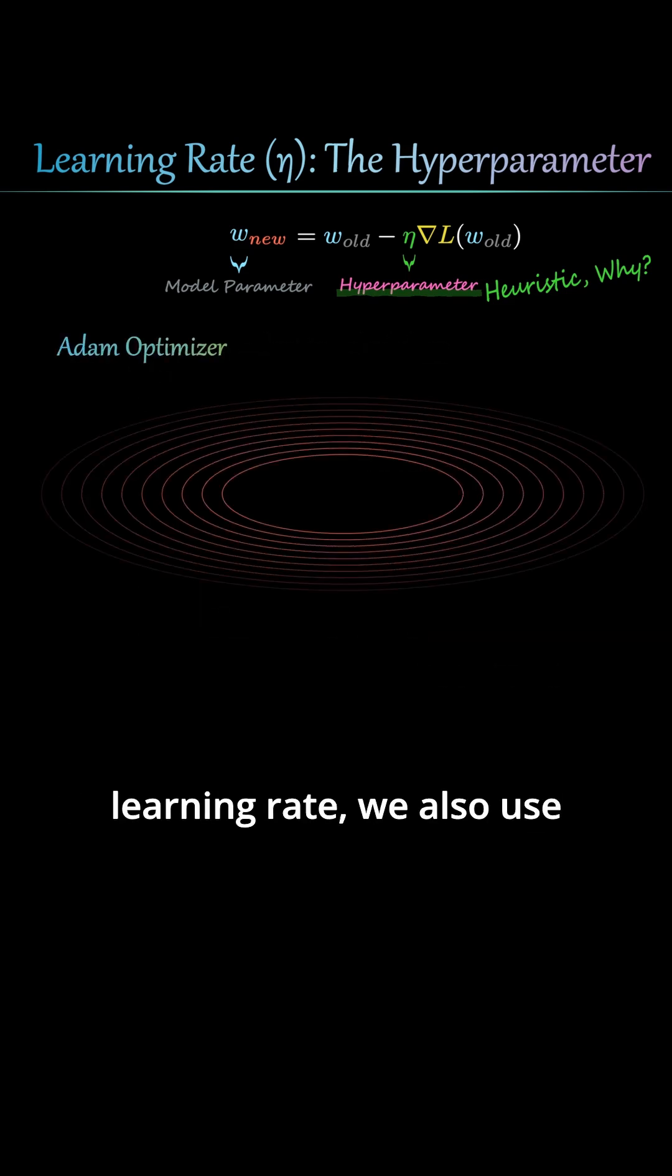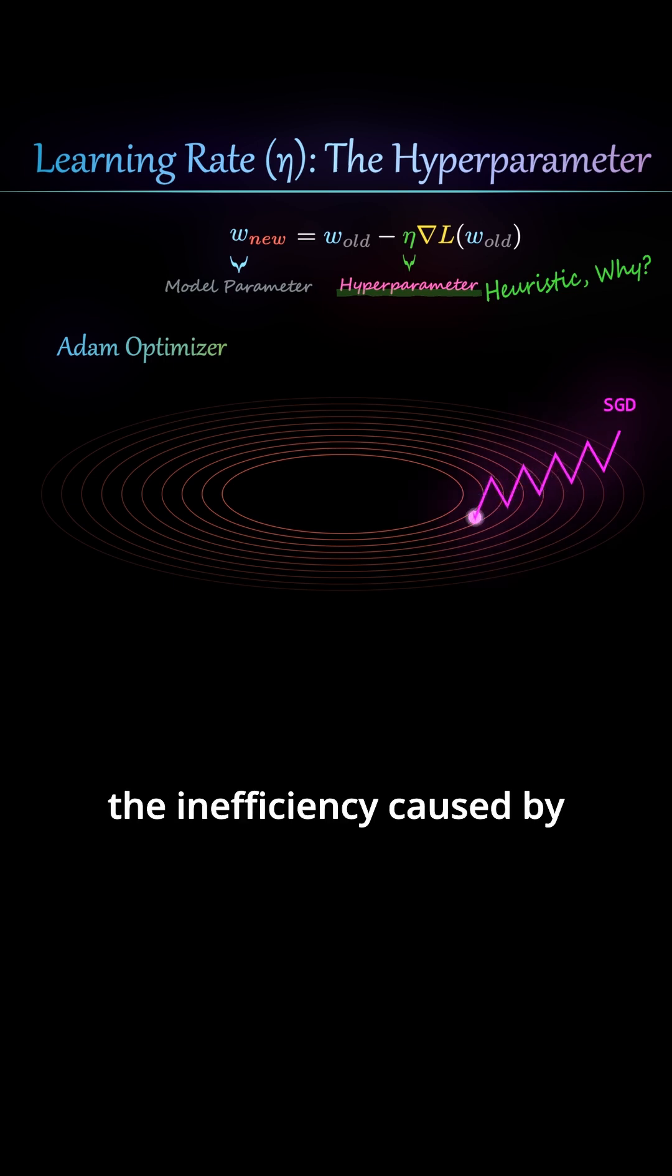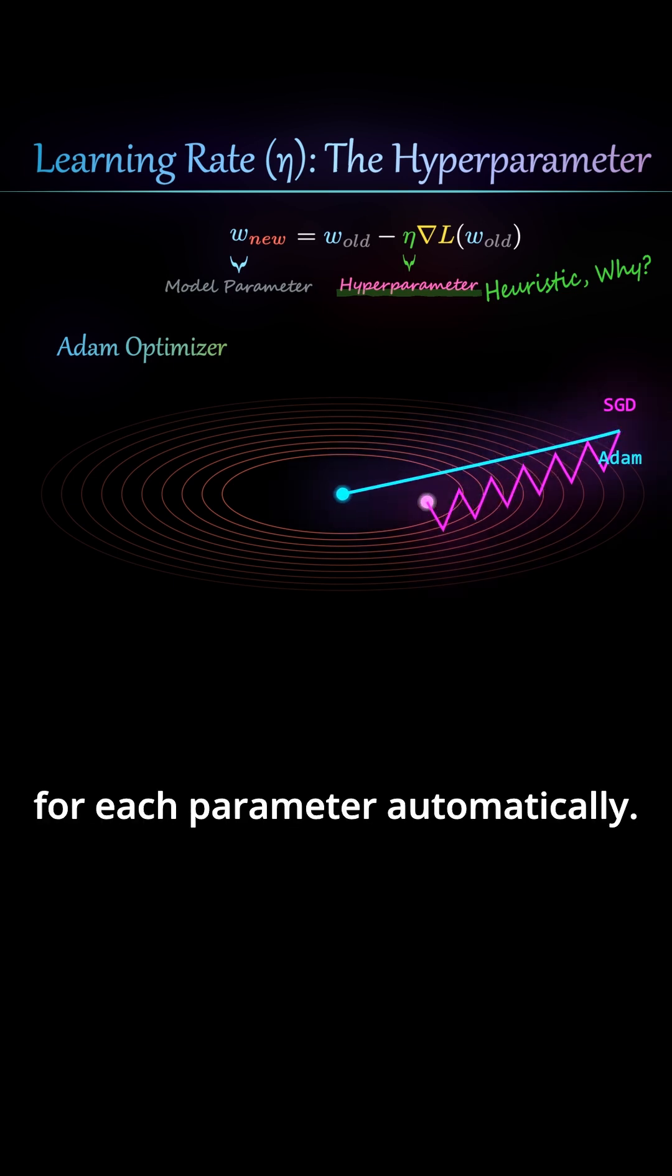Separately from scheduling the learning rate, we also use optimizers like Adam to solve the inefficiency caused by zigzagging on asymmetric contours. Optimizers adjust the learning rate for each parameter automatically.